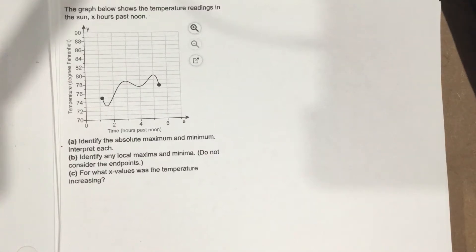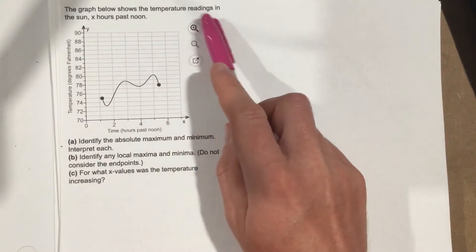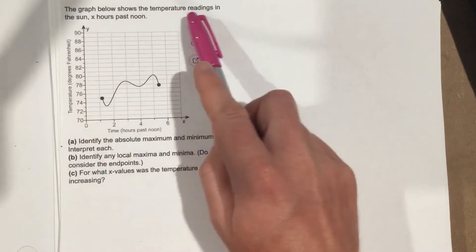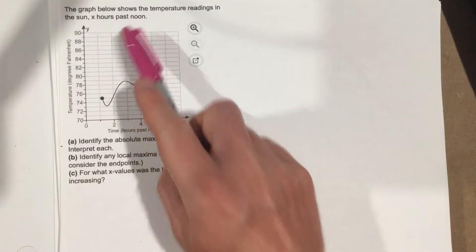This is problem number 8 from section 4.1. The graph below shows the temperature readings in the sun x hours past noon.